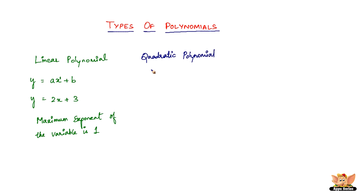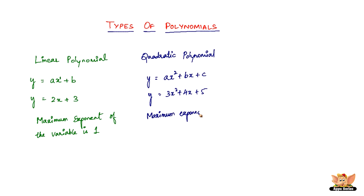The next type is called a quadratic polynomial. It has a greater exponent — it is ax squared plus bx plus c, so y equals ax squared plus bx plus c. The degree of this equation — again, the greatest exponent of the given variable — is 2. For example, with 3x squared plus 4x plus 5, substituting different values for x gives you y. The key point is that the maximum exponent of the variable in a quadratic polynomial is 2.